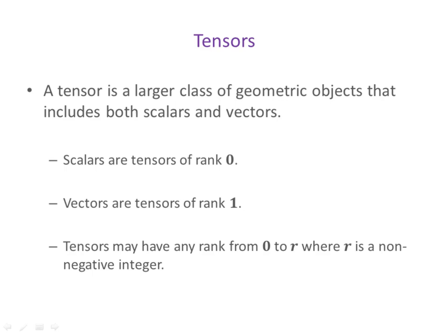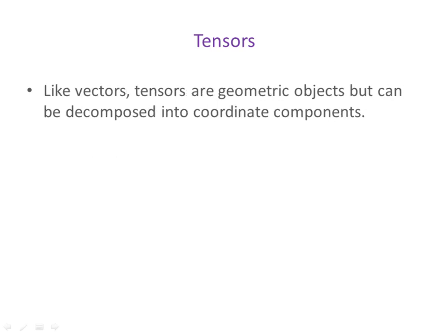Tensors may also have any rank from zero to r, where r is a non-negative integer. We can go as high as we want to, as long as r is an integer. It can't be negative. Well, like vectors, tensors are geometric objects. They exist in and of themselves inside the space, but they too can be decomposed into coordinate components.